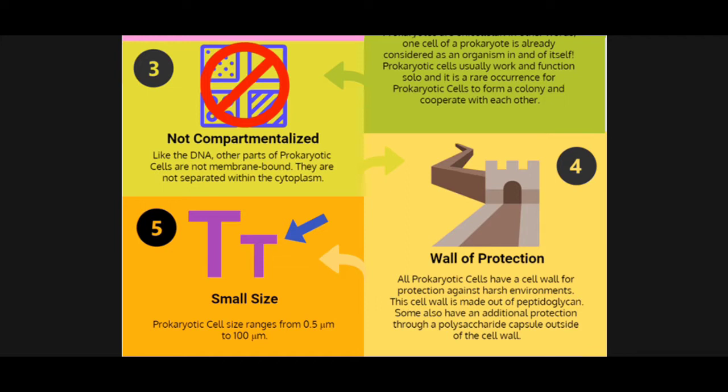Number four: wall of protection. All prokaryotic cells have a cell wall, which they use to protect themselves from harsh environments. This cell wall is made out of peptidoglycan, a polymer that is very effective in protecting the insides of the cell. Some other types of prokaryotic cells also have a capsule wall outside the cell wall itself, and it is made out of polysaccharides.